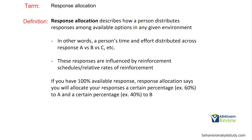Response allocation describes how a person distributes responses among available options in any given environment — a person's time and effort distributed across response A versus B versus C. When you wake up, you're making choices of what to do first: do you get on your phone and play for 30 minutes, or do you get up and start your day? These are choices in your environment, and every time we're making choices, we are allocating responses.